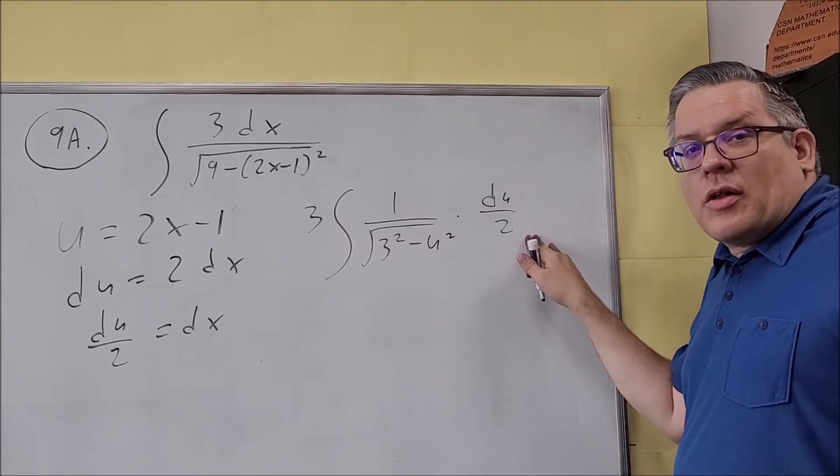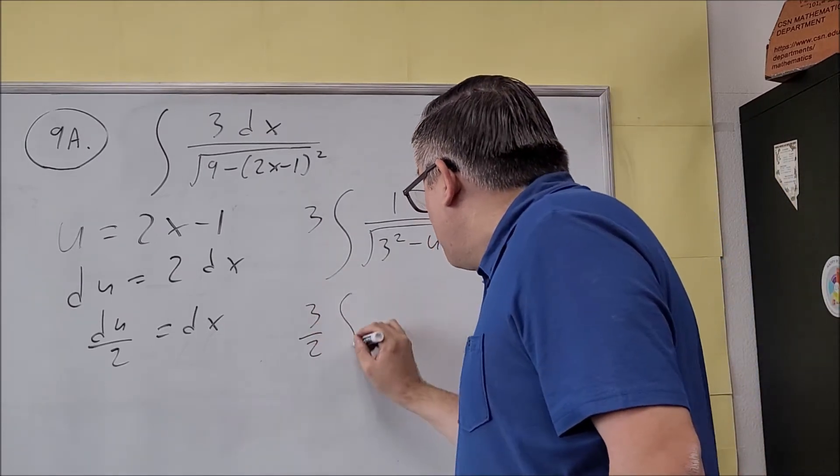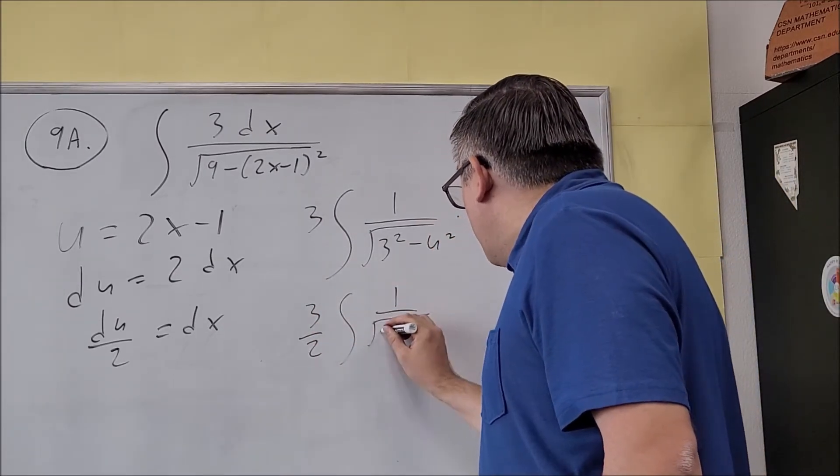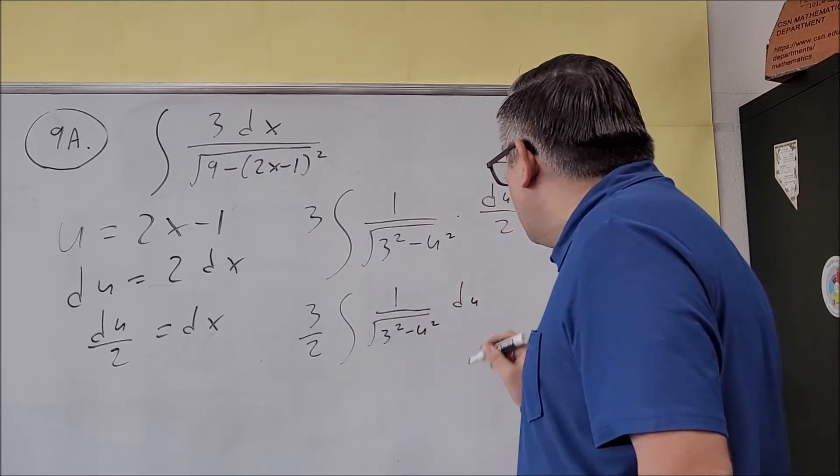Now the 2 that's outside here, I can bring that outside the integral. So I get 3 halves, 1 over square root of 3 squared minus u squared. And then I have a du left over here.